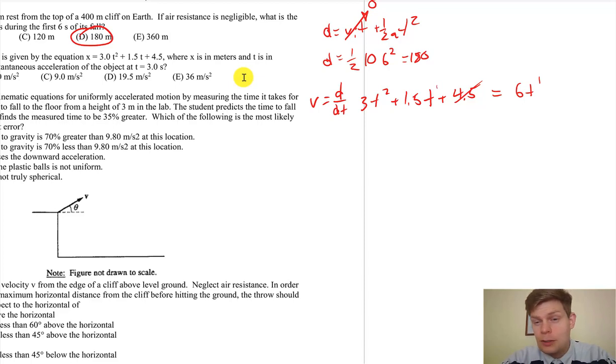For this guy, 1.5, it's 1.5t to the one, so that'll become t to the zero, which is just one. And then our new coefficient is 1.5. Basically it'll end up being t to the zero, and then our new coefficient is 1.5 times one, which is just 1.5.